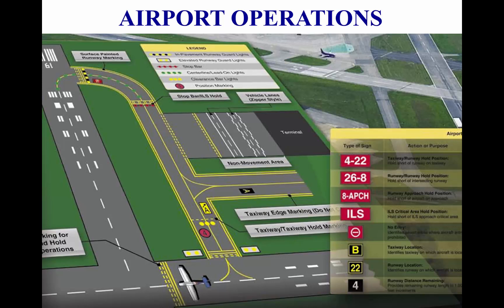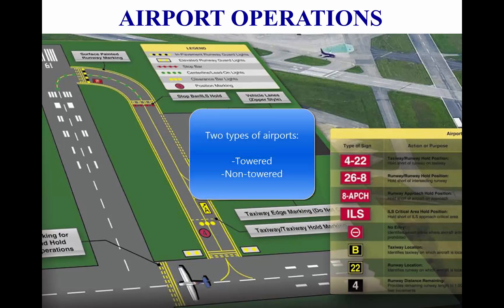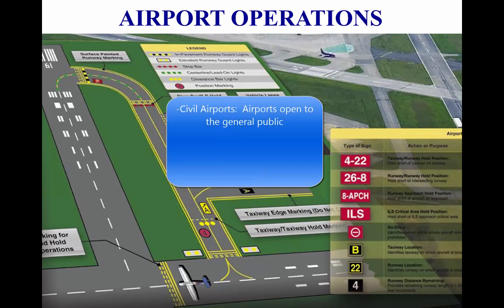Types of airports. There are two types of airports: towered and non-towered. These types can be further subdivided into civil airports, airports that are open to the general public; military or federal government airports, airports operated by the military, National Aeronautics and Space Administration (NASA), or other agents of the federal government; and private airports, designated for private or restricted use only, not open to the general public.